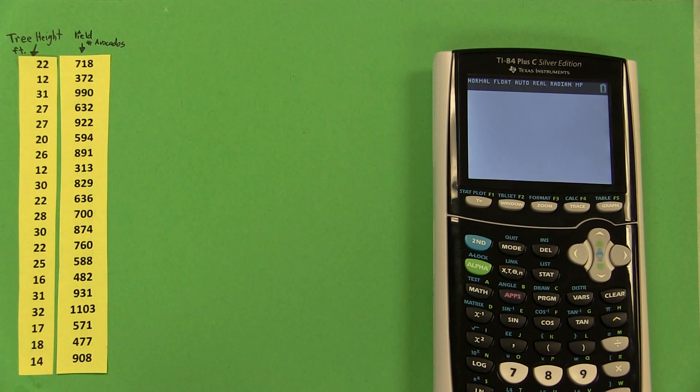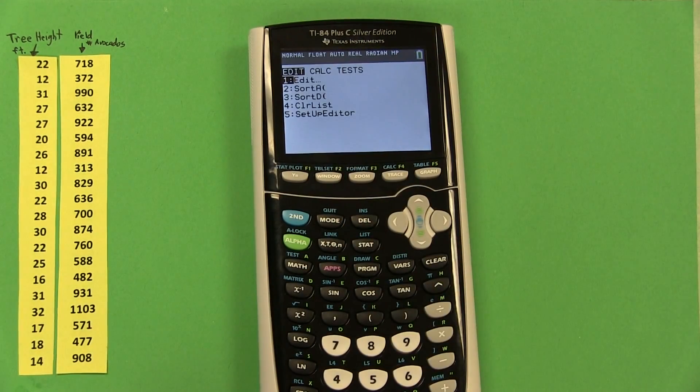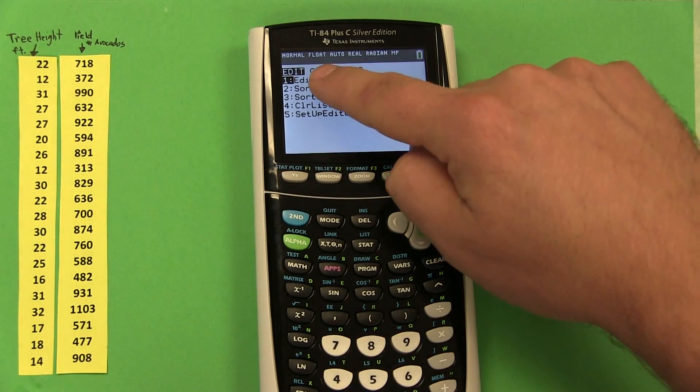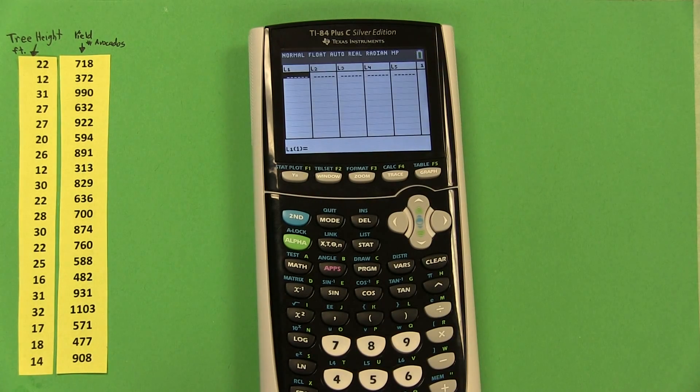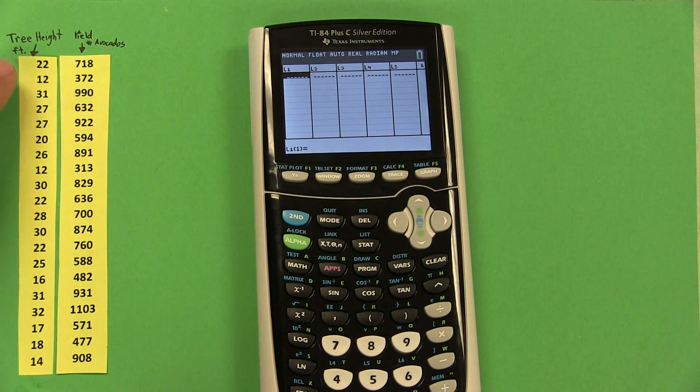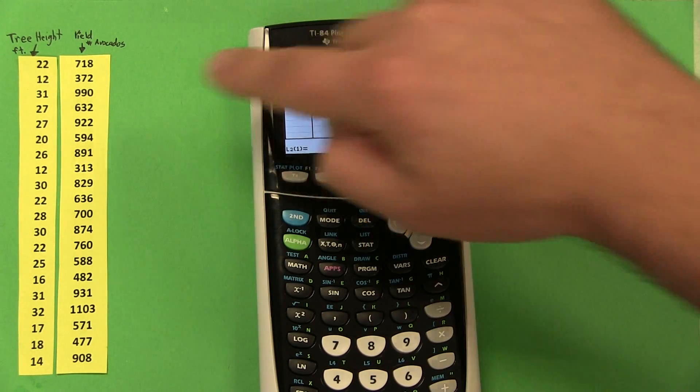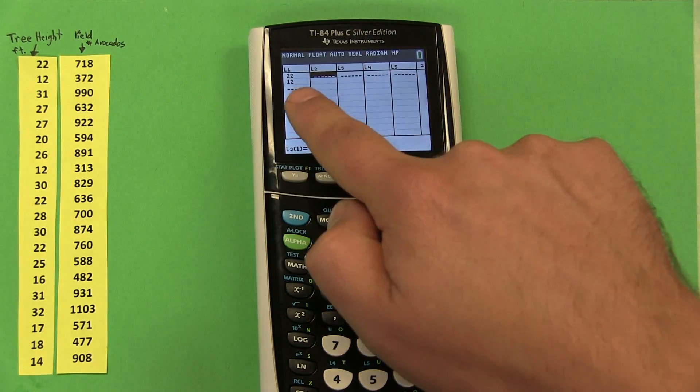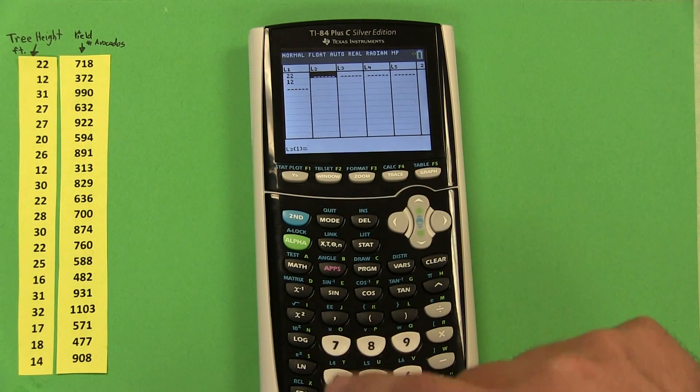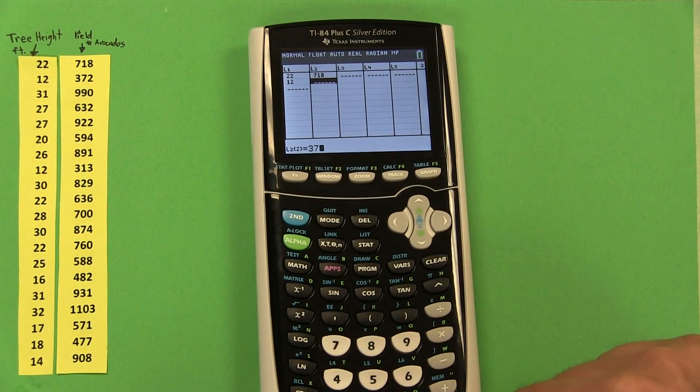So the first thing we're going to do is create a scatter plot. To do this, start by pressing the stat button, then press enter to access the edit menu. These are all the lists, and we're going to use list 1 as our list of tree heights. So we'll start typing in that data, 22, 12, and then we're going to use list 2 for the avocado yield. So across from the 22, we need the 718 avocados that tree produced, then 372.